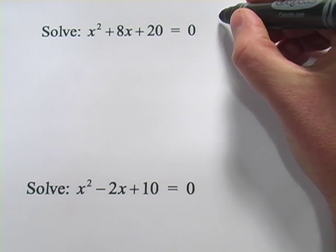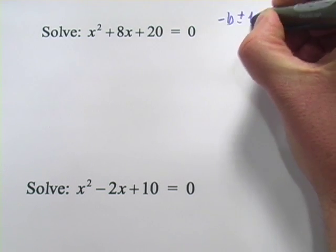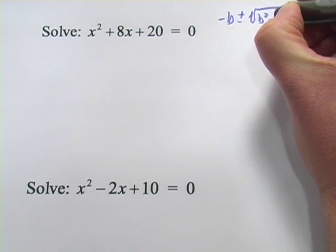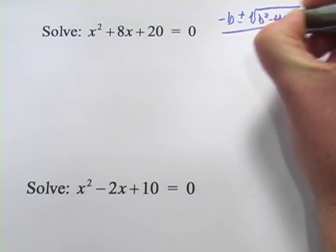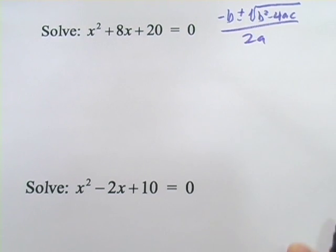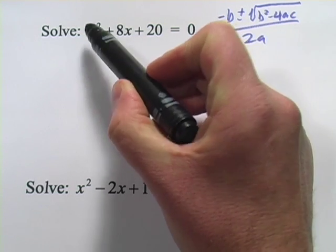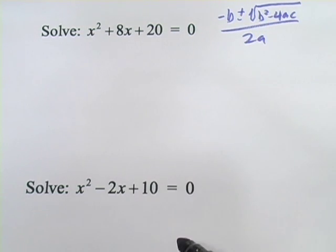Remember our quadratic formula: negative b plus or minus the square root of b squared minus 4ac over 2a. That's what we'll be using here. And a, b, and c are the coefficients of the x squared term, the x term, and the constant.